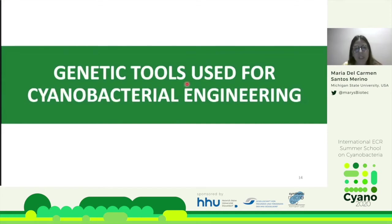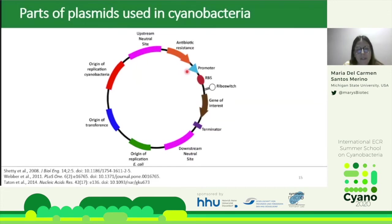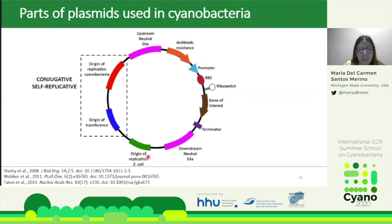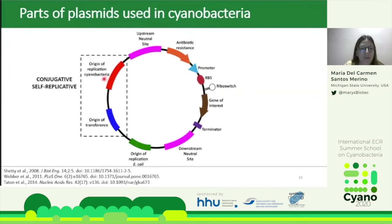For metabolic engineering of cyanobacteria, we need specific tools. First, we need plasmids to introduce modifications into cells. All cyanobacterial plasmids contain an E. coli origin of replication since the constructions are built in E. coli. The first type — conjugative and self-replicative plasmids — require an origin of transfer and a cyanobacterial origin of replication, normally based on endogenous plasmids or the broad-host-range RSF1010 plasmid.